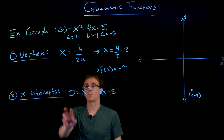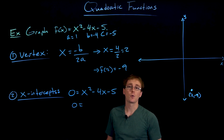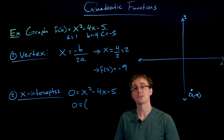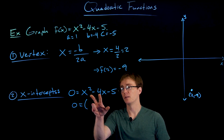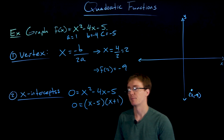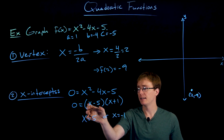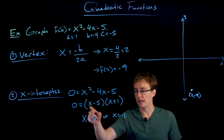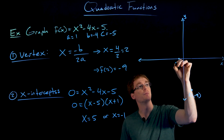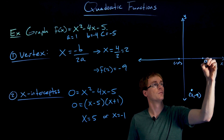To find the x-intercepts, we set y equal to zero and solve for x: 0 = x² - 4x - 5. We can use the quadratic formula, but we should always try to factor first. In this case we can factor: (x - 5)(x + 1) = 0. From that, our zeros are x = 5 or x = -1. So our x-intercepts are the points (-1, 0) and (5, 0).